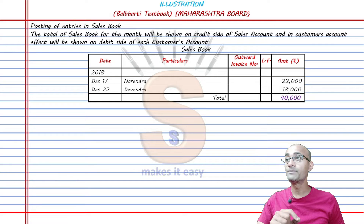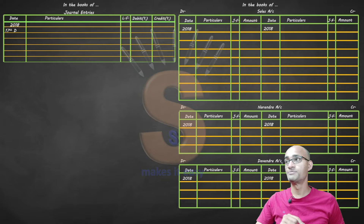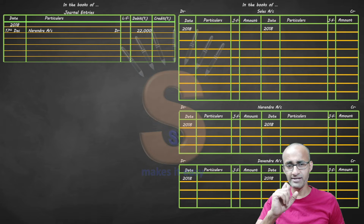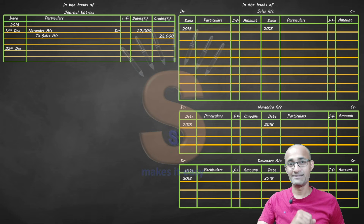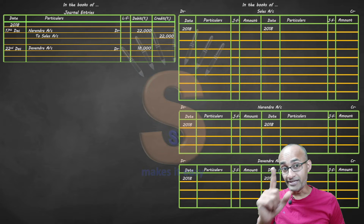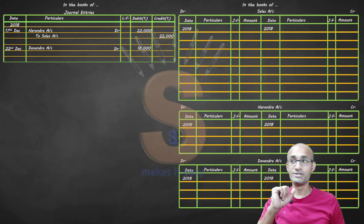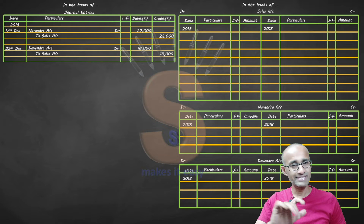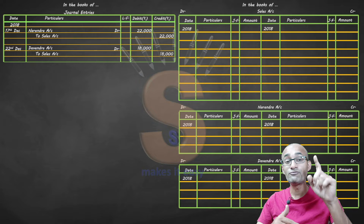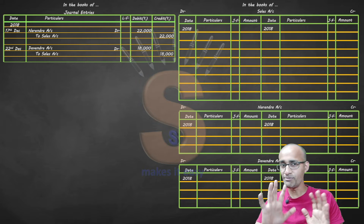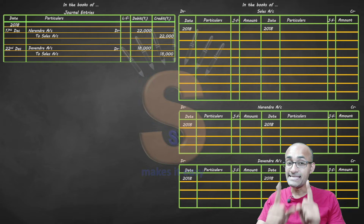On December 17th, you sent goods to Narendra, so Narendra is the receiver and is debited. Sales is credited because sales are income and gains. On December 22nd, you sent goods to Devendra for 18,000, so Devendra is debited to sales. The total of these two journal entries is 40,000.